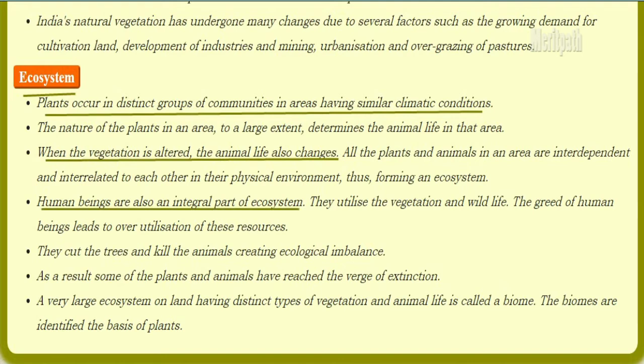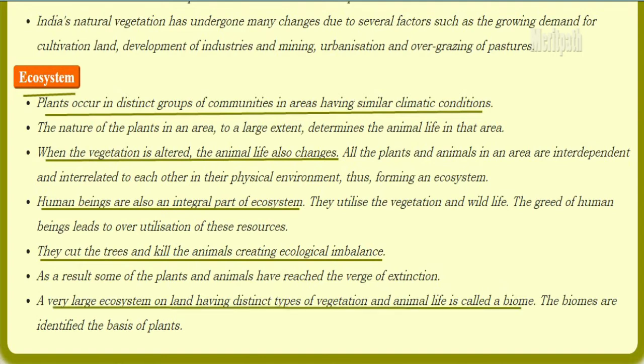Human beings also form an important part of the ecosystem. They utilize vegetation and wildlife, but the greed of human beings leads to over-utilization of these resources — they cut trees and kill animals, creating ecological imbalance. Due to this, animals and plants have reached the verge of extinction. Large ecosystems on land having distinct types of vegetation and animal life are known as biomes, which are identified on the basis of plants.